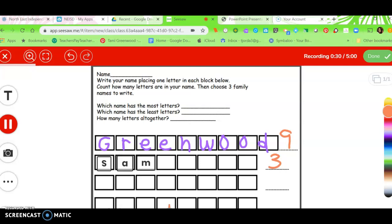And they can tell me at the end which name has the most letters. Greenwood has more letters than Sam. Then answer the question, which name has the least letters? Sam has the least letters. And then they might count how many letters all together. Well, if these were the only two people in my family, then I would add them up and say nine, ten, eleven, twelve, and I would write a twelve.